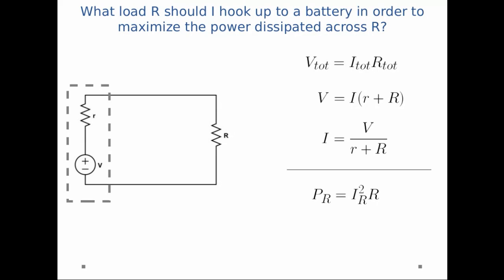And in order to find the power, I know the power across the resistor capital R is equal to I squared R, where I is the current across the resistor capital R. And just plugging stuff in I get V squared R divided by little r plus big R quantity squared.